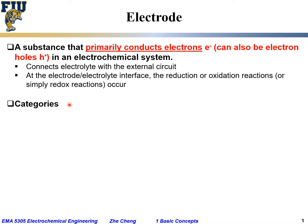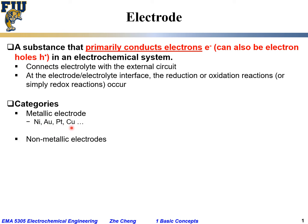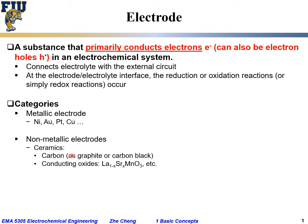Depending on the material, electrodes can be classified into different types or categories. We can have metallic electrodes — the material could be nickel, gold, platinum, copper, etc. And there can also be non-metallic electrodes. For example, we can have ceramic electrodes, including carbon or carbon black. You come across graphite electrodes in many batteries as well, including an alkaline battery or a lithium-ion battery.